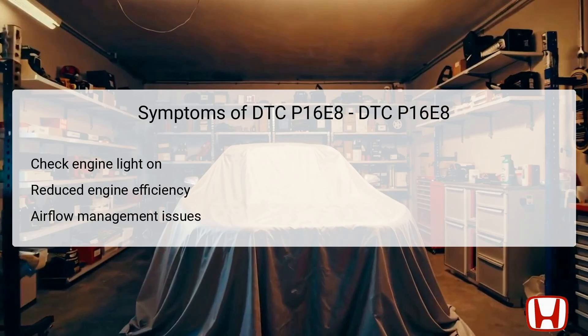When DTC P16E8 is active, a driver may notice several symptoms indicating issues with the vehicle. The most immediate symptom is typically the illumination of the check engine light, signaling that there is an issue that needs addressing. Apart from this warning light, the vehicle may exhibit reduced engine efficiency, meaning you may experience lower fuel economy or decreased power output during operation. Additionally, there may be airflow management issues related to the shutter grille's operation, which can lead to overheating or suboptimal engine performance. If left unresolved, these symptoms can result in more significant damage to engine components or a complete failure of the shutter grille functionality.